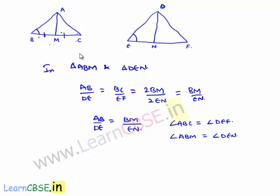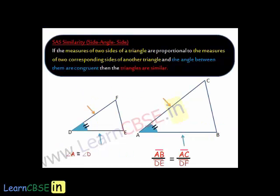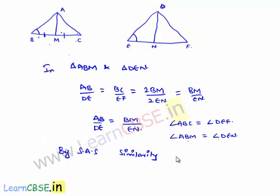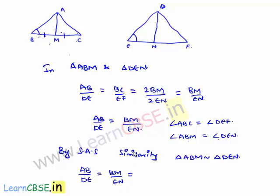Now if we observe in triangles ABM and DEN, two sides are in proportion and one angle is equal. Therefore by SAS similarity, triangle ABM is similar to triangle DEN. Since similar triangles have sides in proportion, we can write AB/DE = BM/EN = AM/DN, where AM and DN are also in proportion.